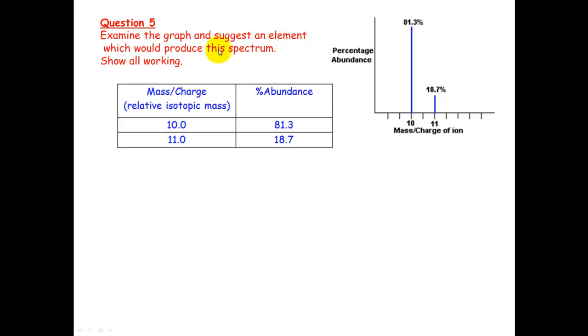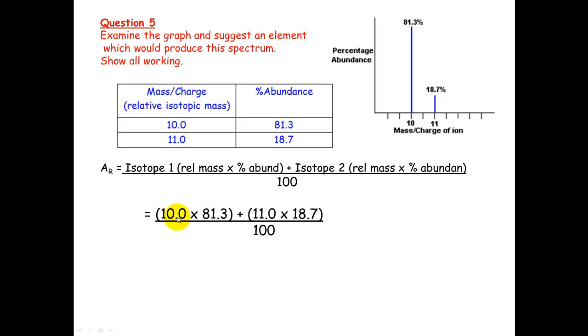Question 5. Examine the graph and suggest an element which would produce this spectrum, show all working. So from the graph here, you can put the information into a table. Isotope 1 has a relative isotopic mass of 10 and an abundance of 81.3. Isotope 2 has a relative isotopic mass of 11 and an abundance of 18.7. So we put those into the formula here. 10 times 81.3 and 11 times 18.7, and we get an answer of 10.2. Have a look at the periodic table and see which element comes closest. In this case, boron would be the closest. It's not exact, but it's the closest one. So we have to assume it's that element. It's got a mass number of 10.811.